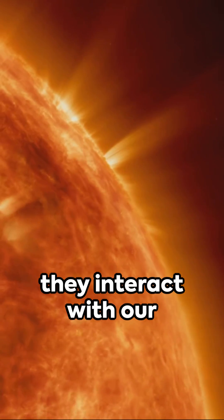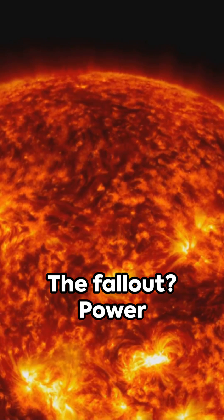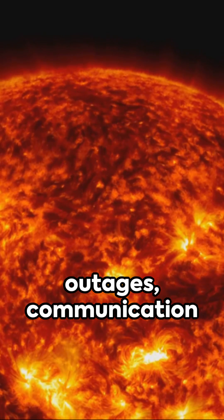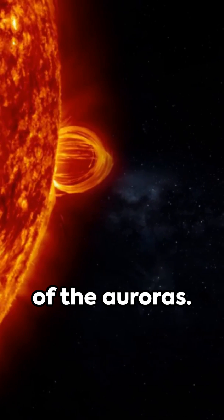When these hit Earth, they interact with our magnetic field, causing geomagnetic storms. The fallout? Power outages, communication disruption, damaged satellites, and an awe-inspiring display of the auroras.